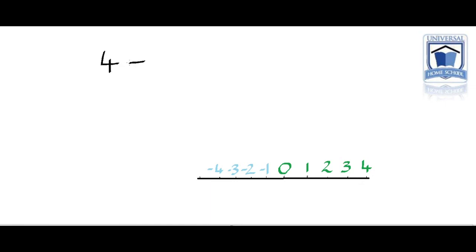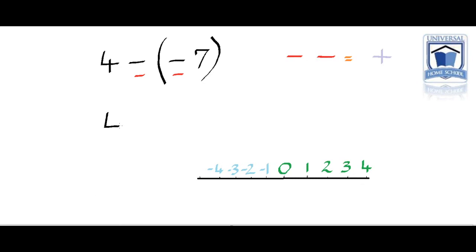Here's another question: 4 take away negative 7. We do exactly the same as before — we look at both symbols. A negative and a negative beside each other become a positive. So we can rewrite this question as 4 add 7, because the two negatives become a positive. On the number line we're going up 4 and then up another 7, so 4 plus 7 simply equals 11.